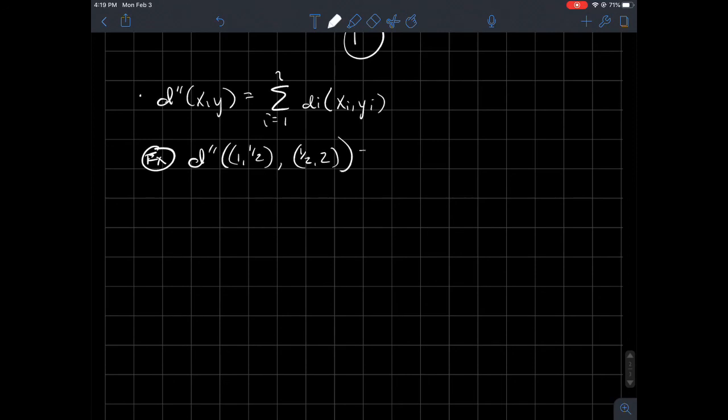And what would this be? So this should just be equal to D one of one, one half plus D two of one half, two. And if I do these same ideas before, D one, remember, is just absolute value of the difference just as it has been in the past three examples. Plus D two is just the discrete one. So it would just be one since these two inputs are different. And so what do I get here? I think that I get one half plus one is three halves for that distance.